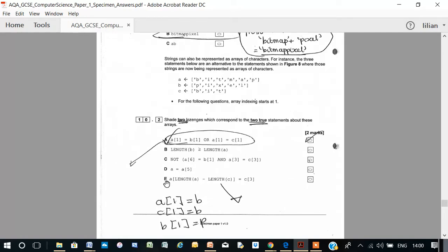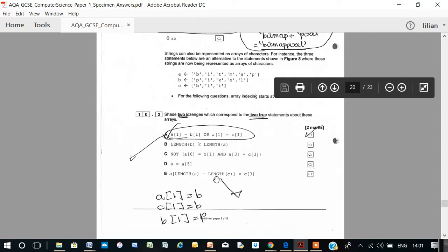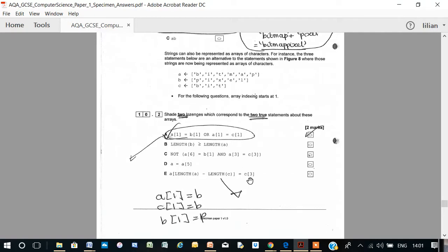Now, let's look at E. I just happen to know that E is correct. Length of A is 6. Length of C is 3. So, 6 minus 3 is 3. So, it's A3 equals C3.